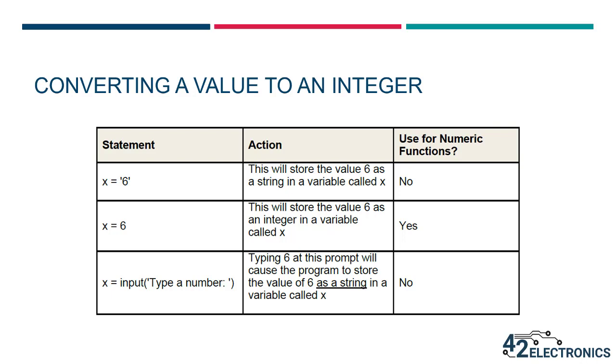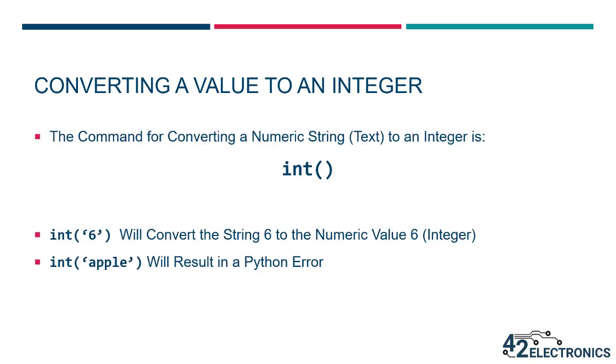Fortunately, Python has a great way to convert back and forth between strings and integers. The command for converting a numeric string to an integer is int() with opening and closing parentheses. You're just going to insert a variable value between the parentheses and Python will convert the value to an integer, so you can use that value for math purposes.